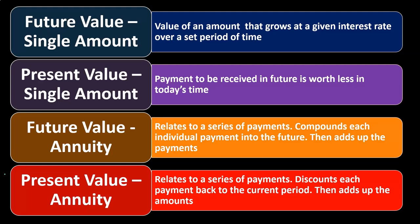If the rate is going to be fixed during that time period, then you might be able to use an annuity calculation — for example, a present value of an annuity — rather than taking each item as a present value of one. You could think of a series of payments that you're trying to bring back to the current period as a present value of an annuity, or you could take each one of them as a present value of one and bring them back individually. The present value of an annuity will be much faster as a calculation if using mathematical formulas.